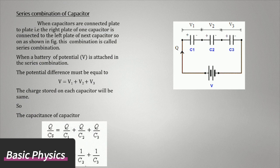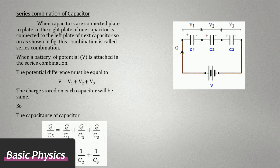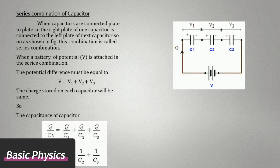When a battery of potential V is attached in the series combination, the potential difference must be equal to V = V1 + V2 + V3. The charge stored on each capacitor will be same.